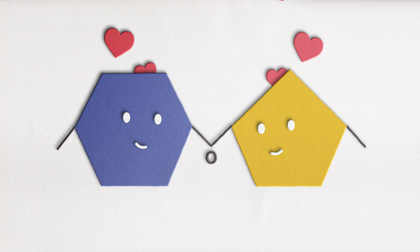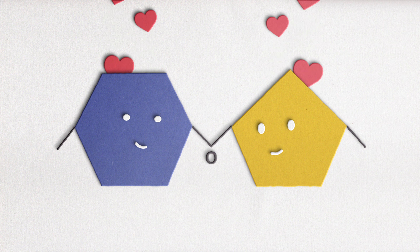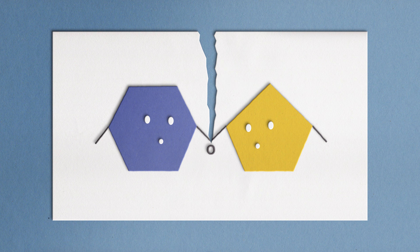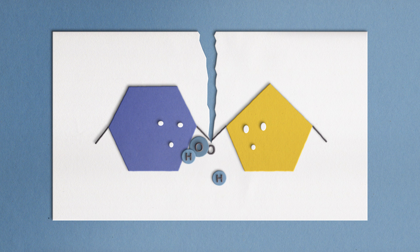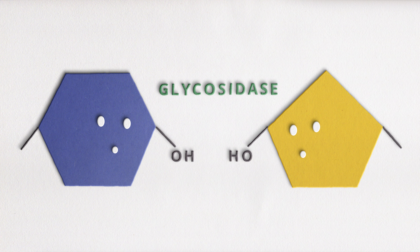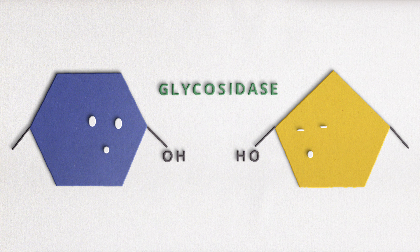If we want to break up these two monosaccharides, that is done through a hydrolysis reaction. All we have to do is introduce them again to a molecule of water. The water provides the hydroxyl group or OH for one molecule and the hydrogen or H for the other to break apart the bond, causing the molecule to return to its original two components. To make this breakup more efficient, we can introduce a glycosidase, an enzyme which normally facilitates the hydrolysis reaction.